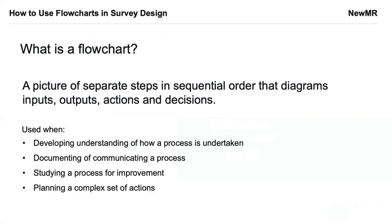So first of all, what is a flowchart? I'm sure we've all seen one, but it's worth starting at the beginning. A flowchart is a separate step set of steps that show a sequential order of actions, outputs, or decisions. They're useful when talking about complex processes and communicating processes to other people, studying processes to find improvements, and trying to look at complexity of action.